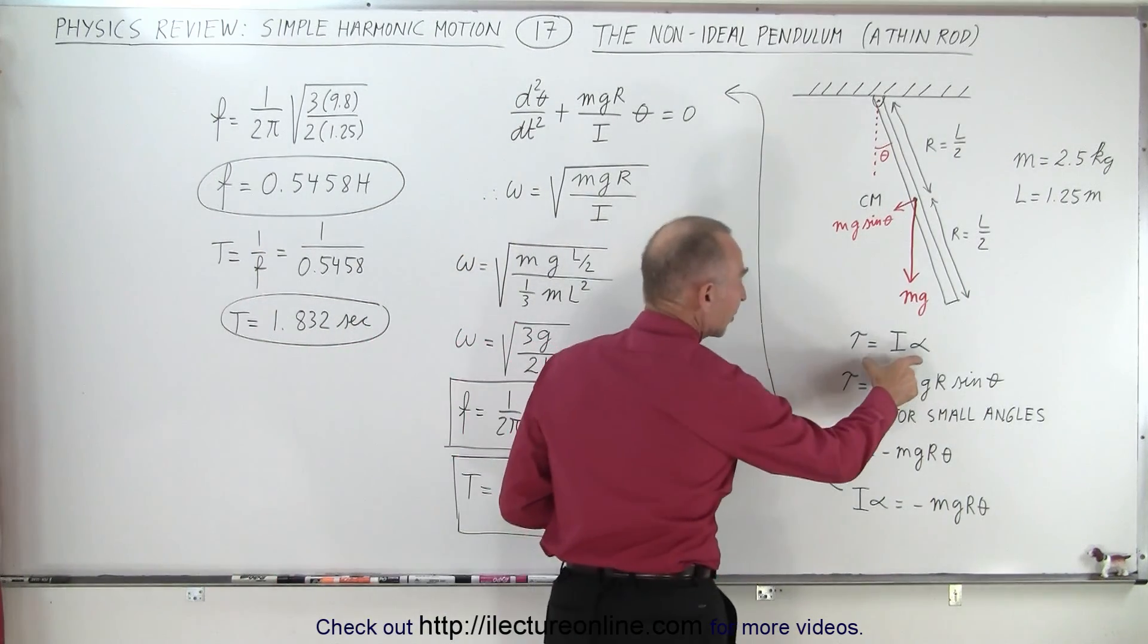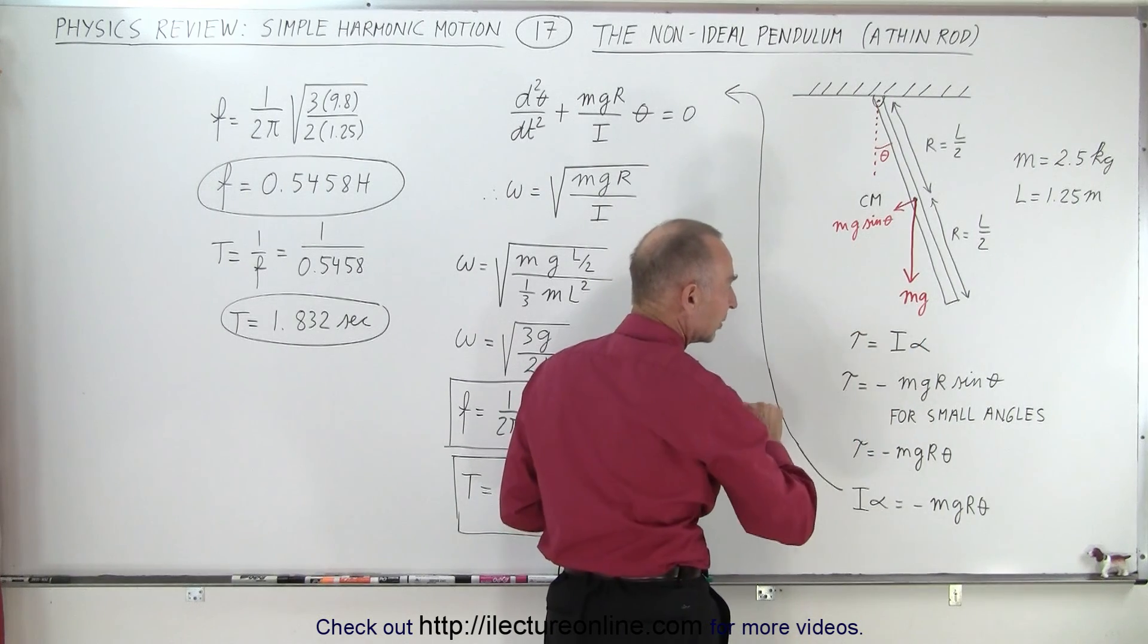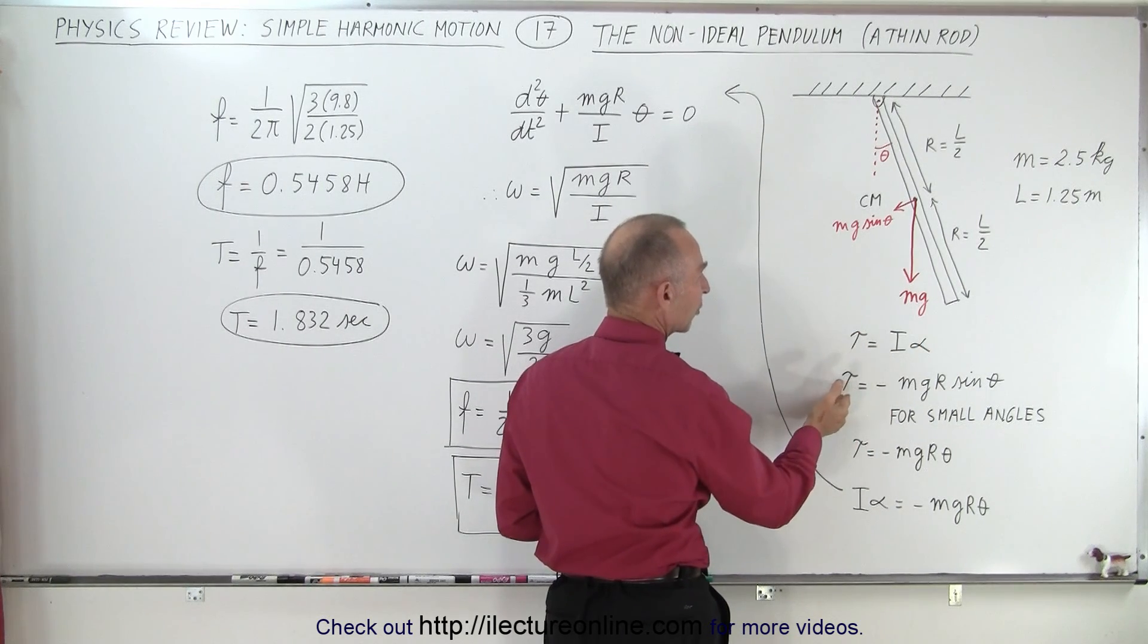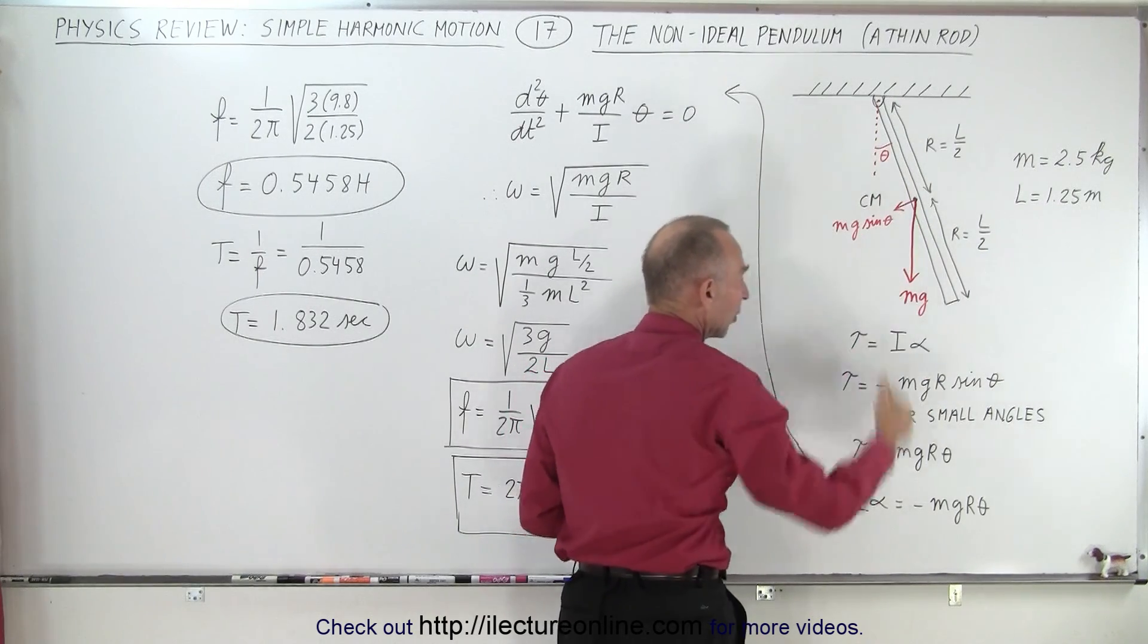Starting with the F equals ma equivalent in rotational motion, so this is torque equals I alpha, and we also know that the torque is caused by the force mg sine theta acting through a distance of r.